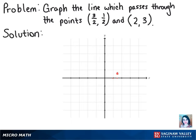And then for our second point, we'll move over on the x-axis 2, and then go up 3. And that gives us our second point. And then we can connect these two points, and we have our line.